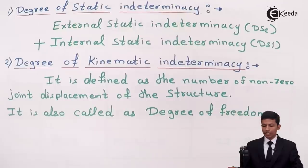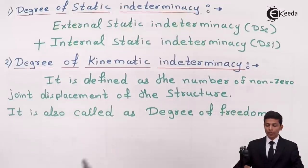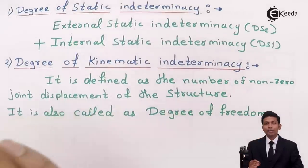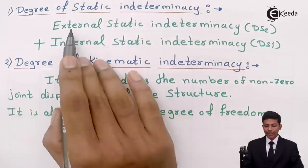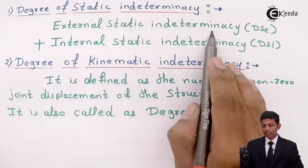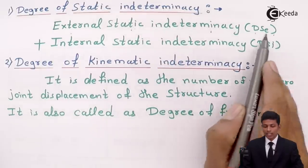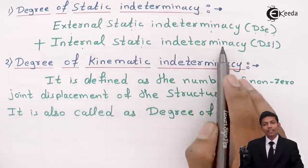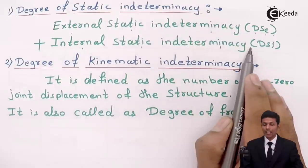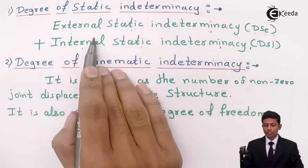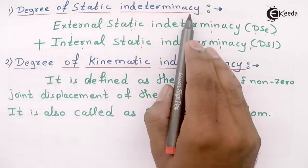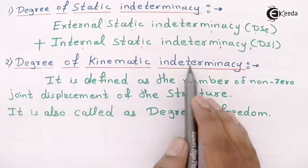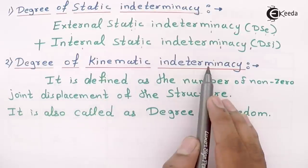In degree of static indeterminacy there are two parts: internal static indeterminacy (DSI) and external static indeterminacy (DSE). The addition of both gives the degree of static indeterminacy: DS = DSE + DSI.